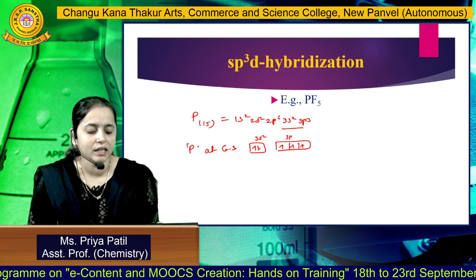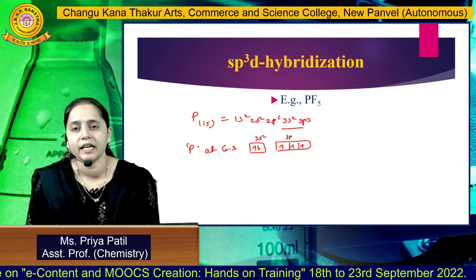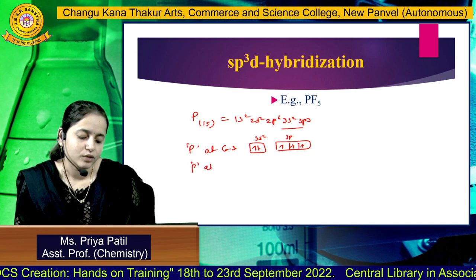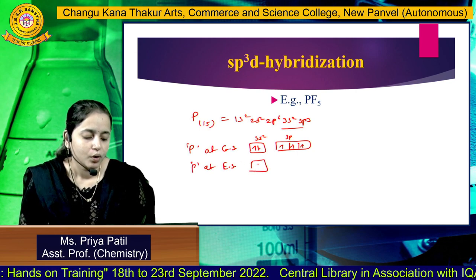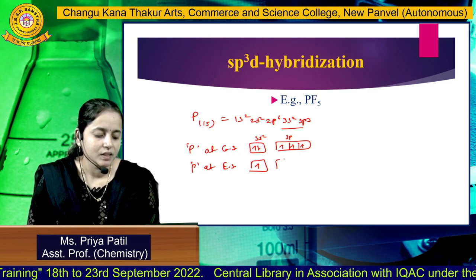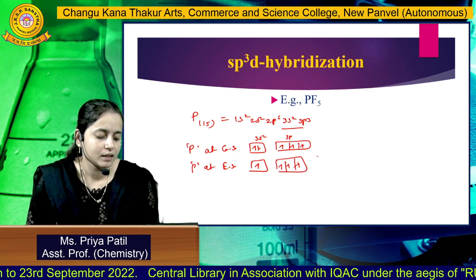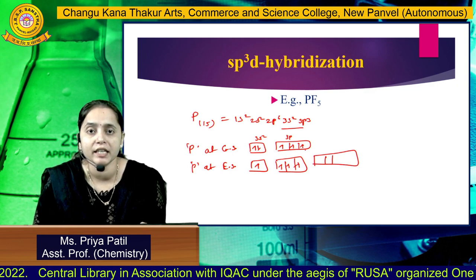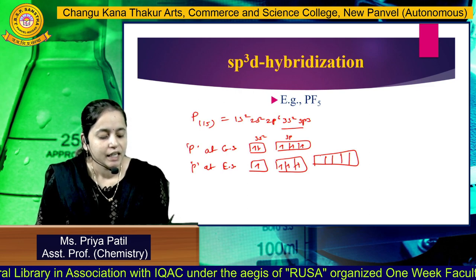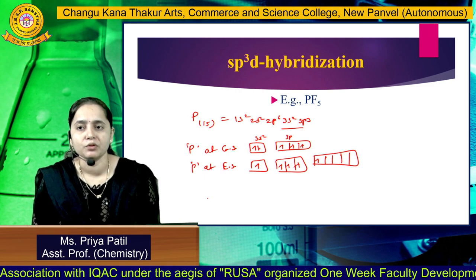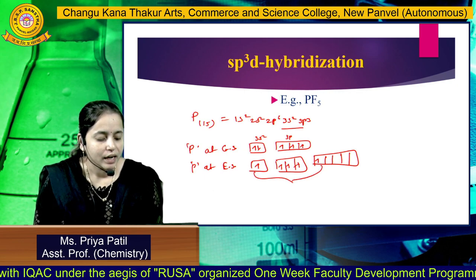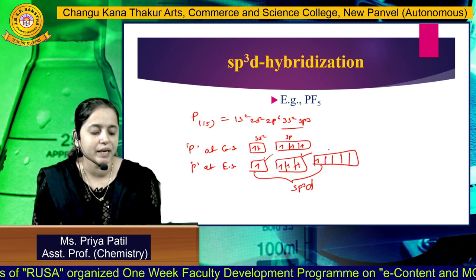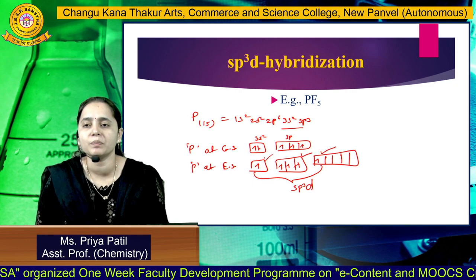Each suborbital of the P orbital has 1 electron each. When phosphorus gets excited, it shows 1 electron in the S orbital and 3 electrons in the P orbital, and 1 electron from the 3S orbital gets promoted to the 3D orbital, so 3D also contains 1 electron. Collectively, these form 5 SP3D hybrid orbitals — 1 from S, 3 from P, and 1 from D.